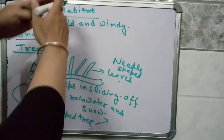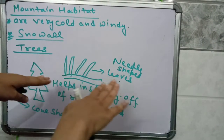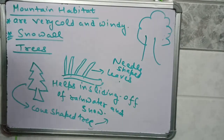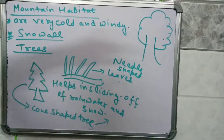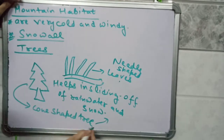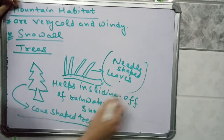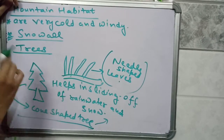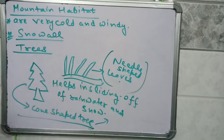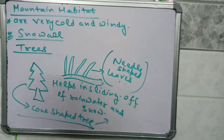If a tree is very bulky in shape, it will take a large amount of time to remove all the water from its surface. But the cone-shaped trees found in mountain areas, with their needle-shaped leaves, allow rainwater and snow to slide off very easily. These are the adaptations by trees found in mountain areas.